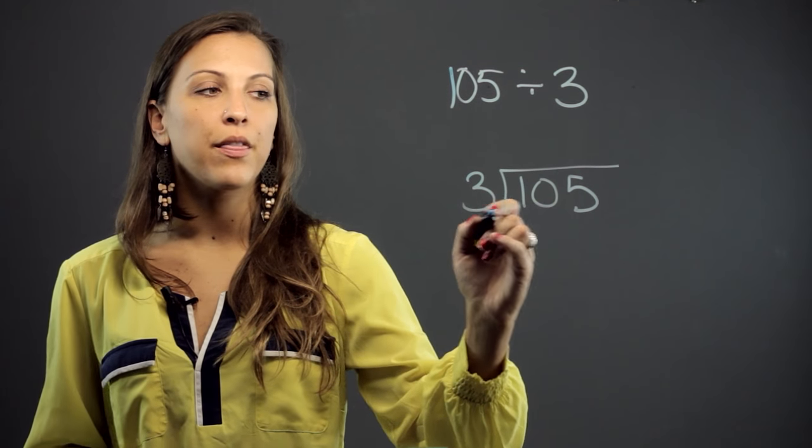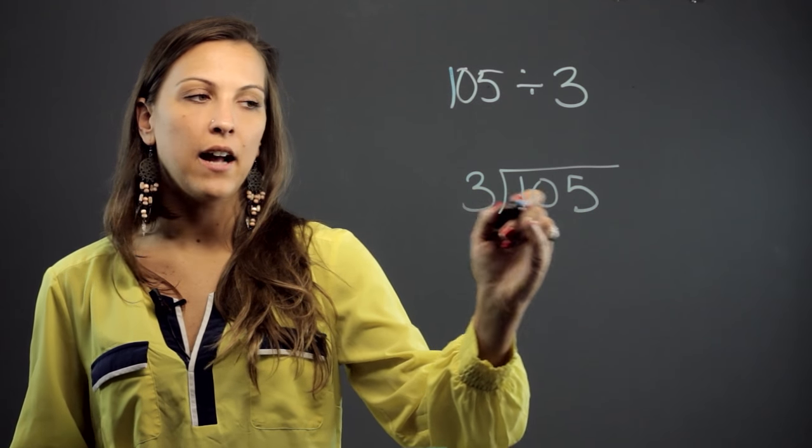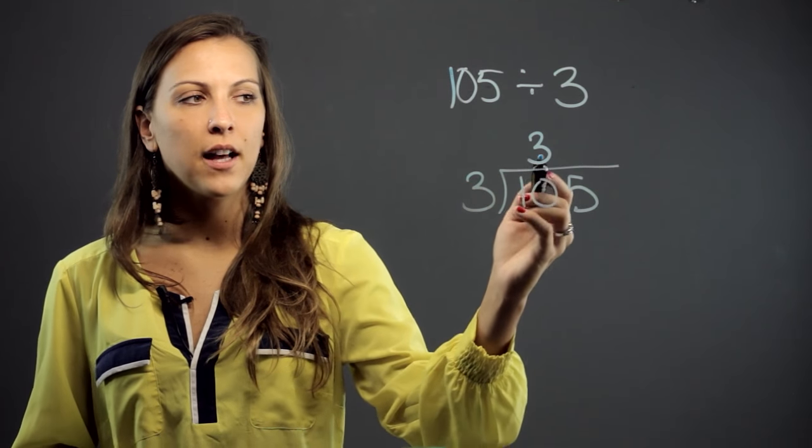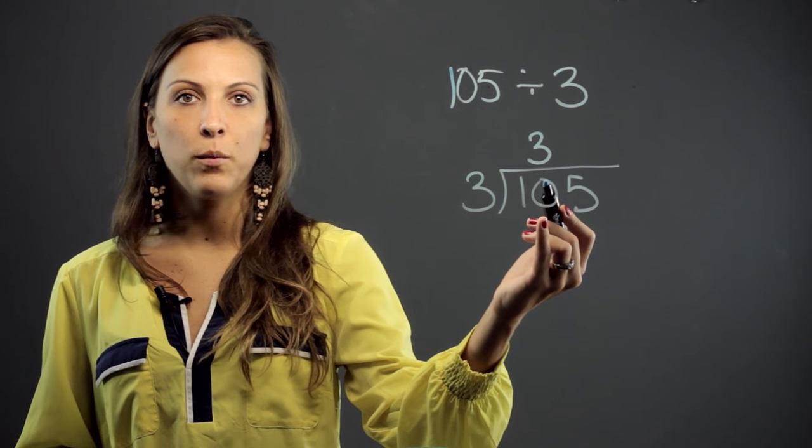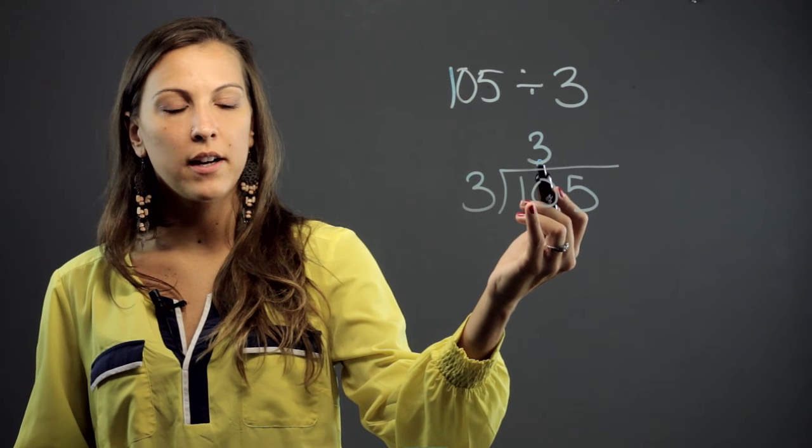So then we move on to the next number, can 3 go into 10? It can. 3 goes into 10 three times. So we put that 3 on top of the last digit that we used, which was the 0. So it has to go right on top of the 0.